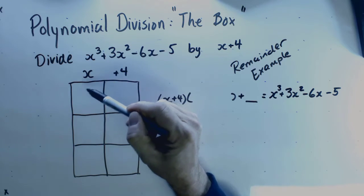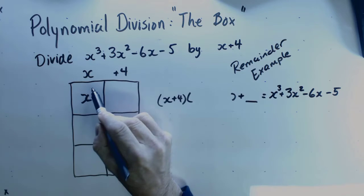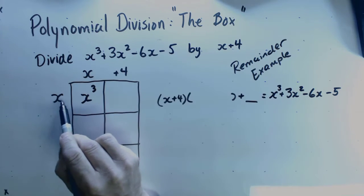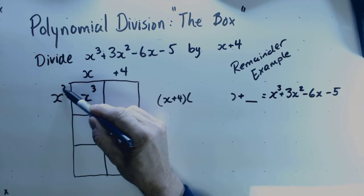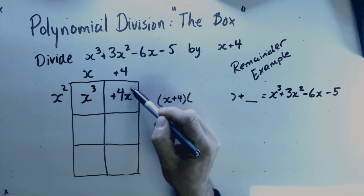Since this is x³, x times something is going to be x³. Well, I know that something is x². Since x + 4 is multiplied by this whole thing, this must be +4x².